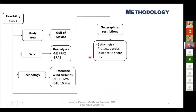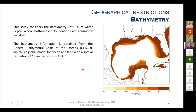The second part of the methodology is the geographical restriction, which includes four criteria: bathymetry, protected areas, distance to shore, and the Exclusive Economic Zone. These were selected because they represent technology requirements and reflect the data available at the time of the study.